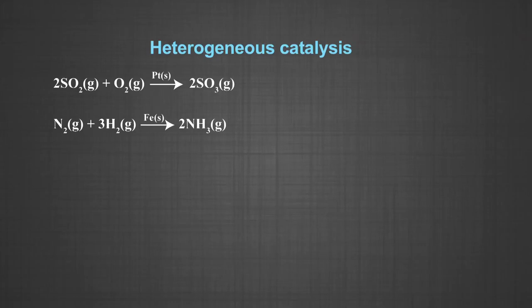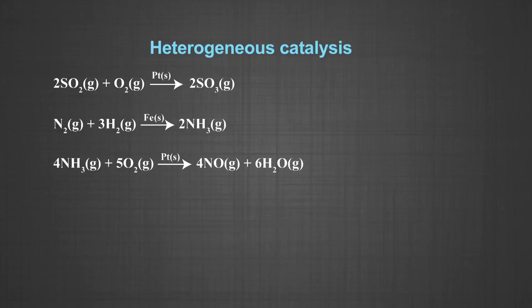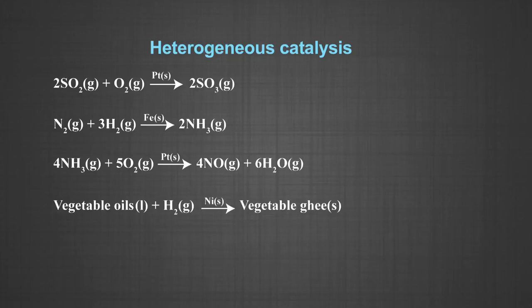Dinitrogen reacts with dihydrogen to give ammonia using iron as the catalyst. The reactants are in the gaseous state while the catalyst is in the solid state. Number three, oxidation of ammonia into nitric oxide in presence of platinum gauze in Ostwald's process. The reactants are in the gaseous state while the catalyst is in the solid state. Number four, hydrogenation of vegetable oils in presence of finely divided nickel as catalyst. The reactants are in liquid and gaseous states, but the catalyst is in the solid state.